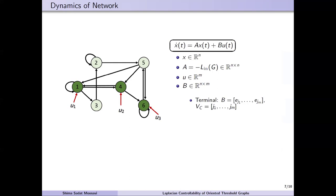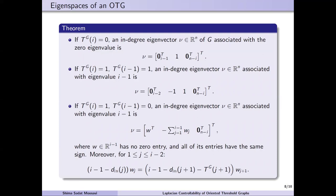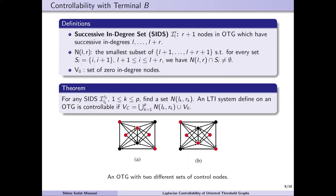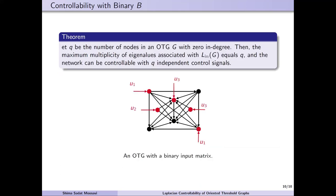We consider two cases for the input matrix B. In the first case, B is terminal and every input signal is injected into only one node called the control node. In the second case, B is a binary matrix. We first derive the spectrum and the modal matrix associated with an OTG. Then, we establish graph theoretic conditions for controllability of an LTI system on an OTG with respectively a terminal and a binary input matrix B. Thanks for your attention.